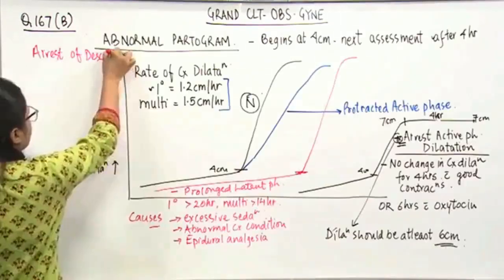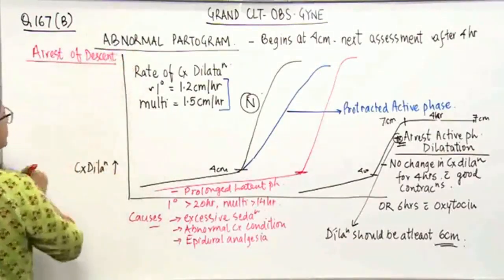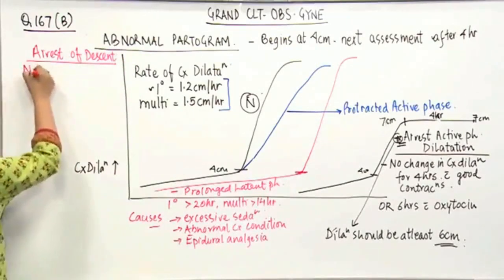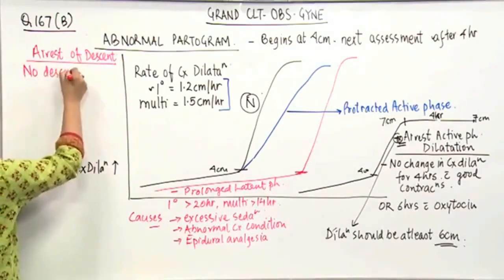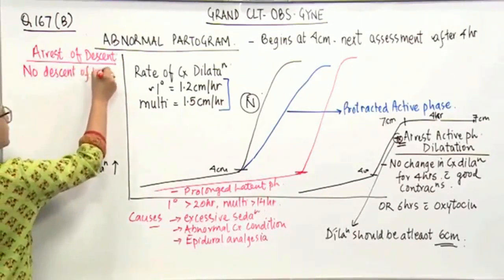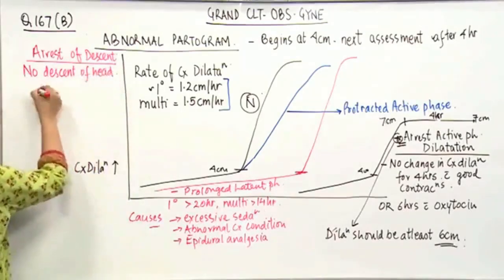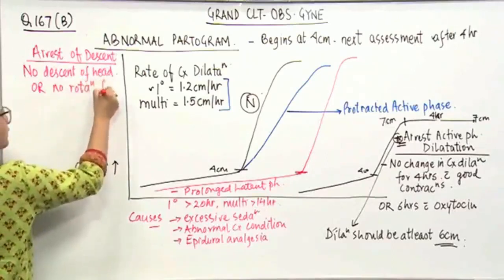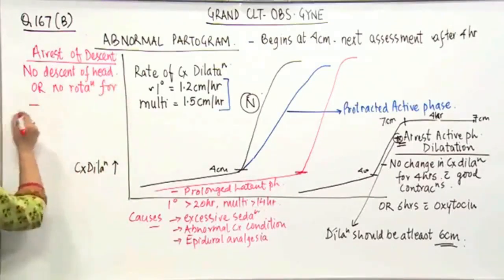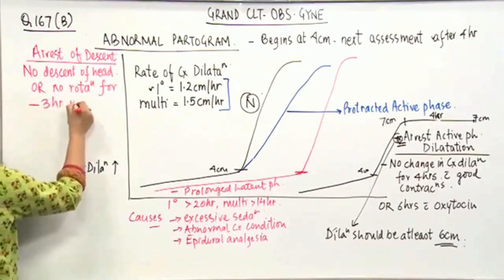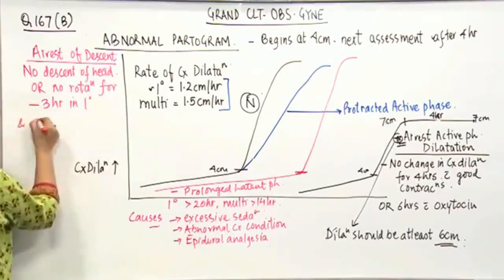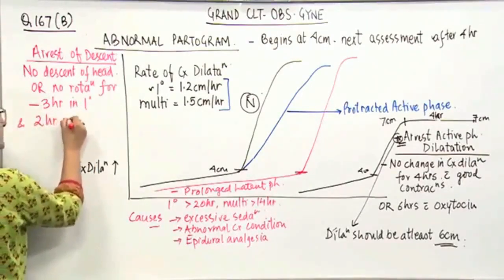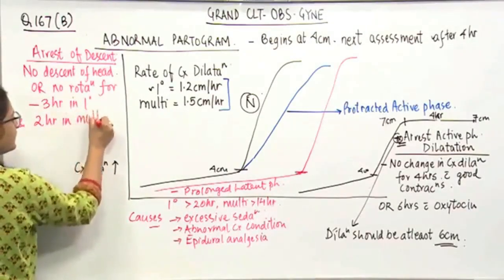the correct answer is option B. Now, arrest of descent is no descent of head or no rotation for the time period is important for 3 hours in prime and 2 hours in multi, right?